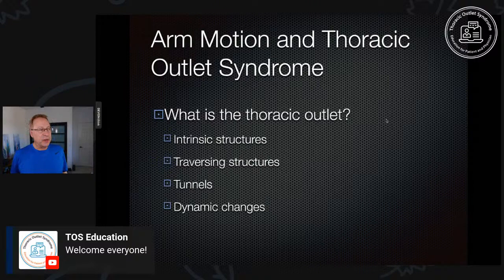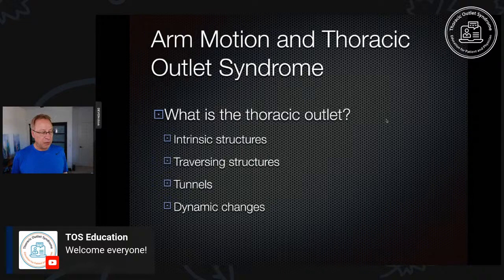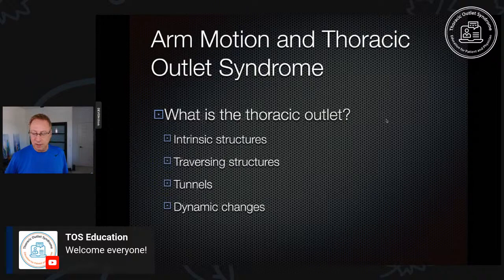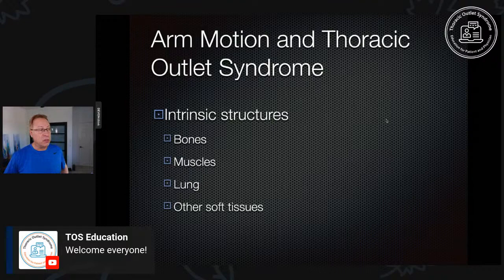We also have a series of at least three tunnels, as classically described by doctors — you've probably heard of these. The scalene triangle is one. These tunnels result from the anatomy of the thoracic outlet and change in different patients and with different arm positions. Finally, we'll talk about the dynamic changes, or arm motion — that's the key point of this talk. The intrinsic structures of the thoracic outlet include bones, muscles, lung, and other soft tissues such as ligaments.